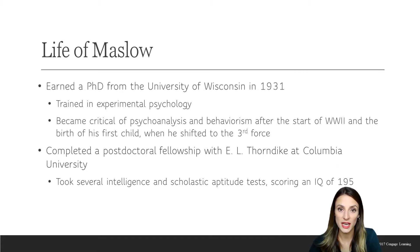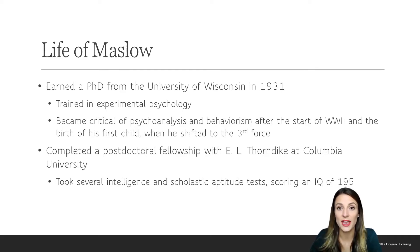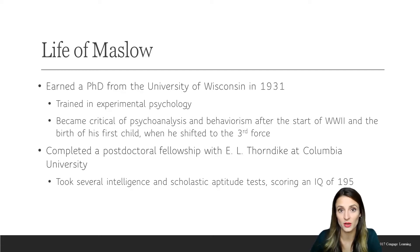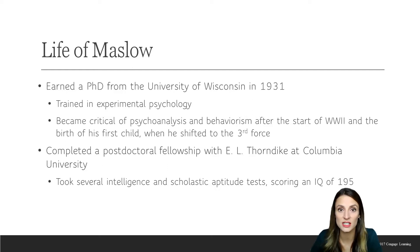He earned his PhD in 1931 from the University of Wisconsin. He focused his attention on experimental psychology and became critical of psychoanalysis and behaviorism, the other two forces, after the start of World War II and after the birth of his first child. He then shifted his attention to the humanistic approach. He completed a postdoctoral fellowship with E.L. Thorndike at Columbia University, who reported that Maslow was extremely intelligent at the genius level, with an IQ of 195 — the average being 100.